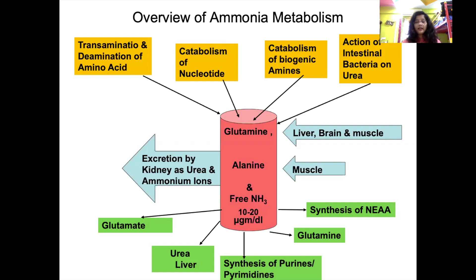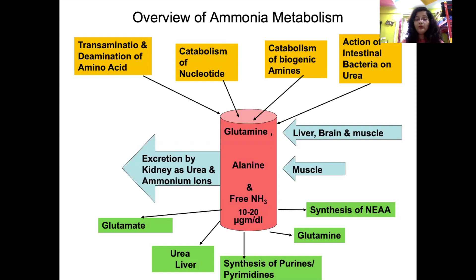The major part of ammonia is excreted through the kidney. Ammonia is still important in the body: it is used in synthesis of non-essential amino acids, and glutamine — the transport form of ammonia — plays a significant role in synthesis of purines, pyrimidines, and transamination reactions. The major part of free ammonia is converted into urea, and it also leads to synthesis of glutamine. This is the overview of ammonia metabolism.